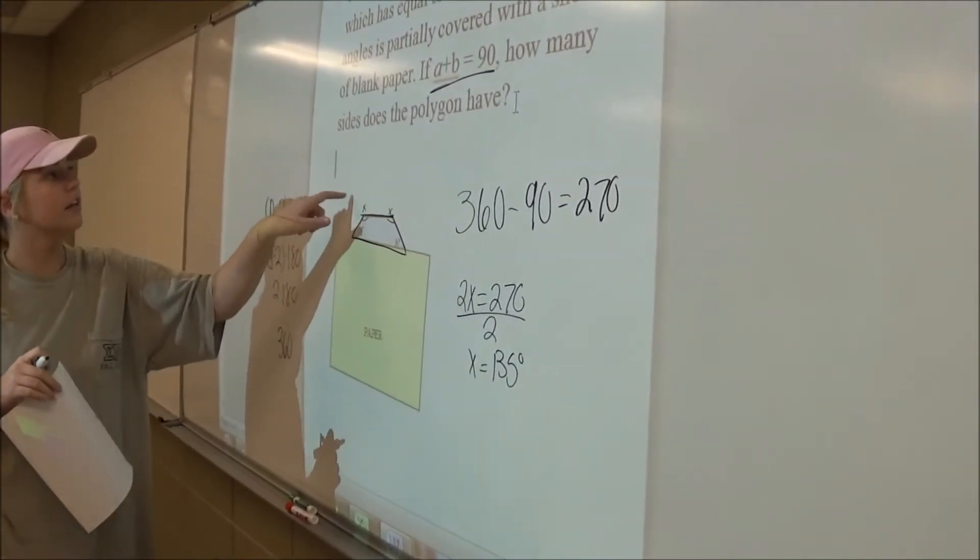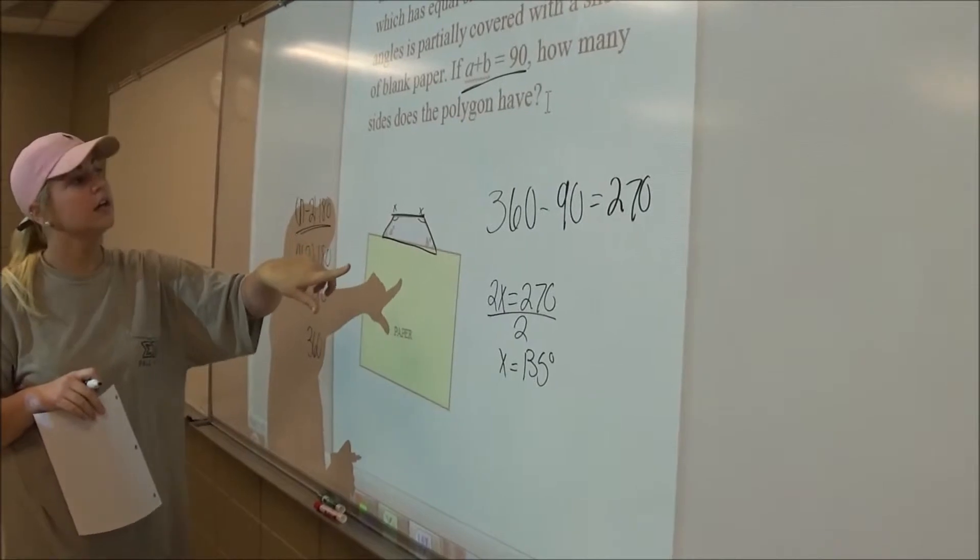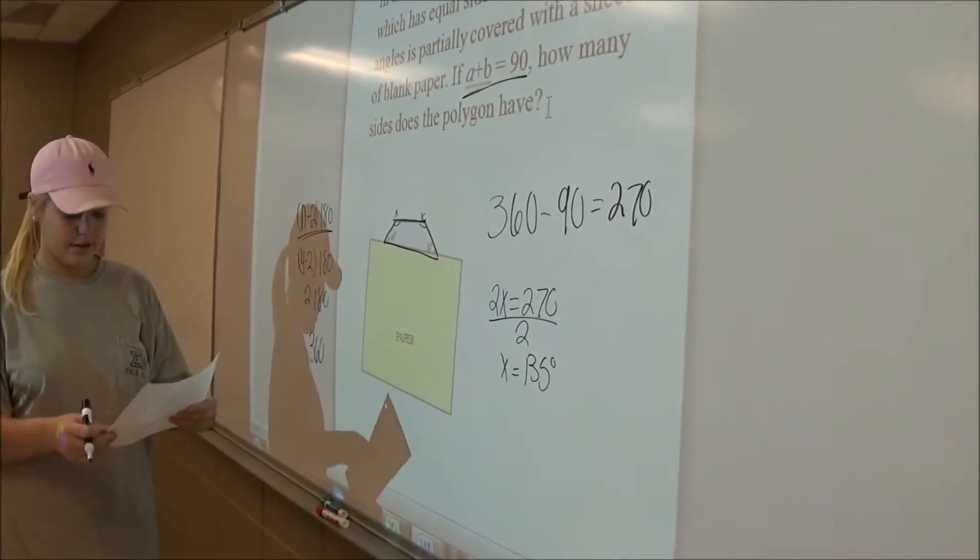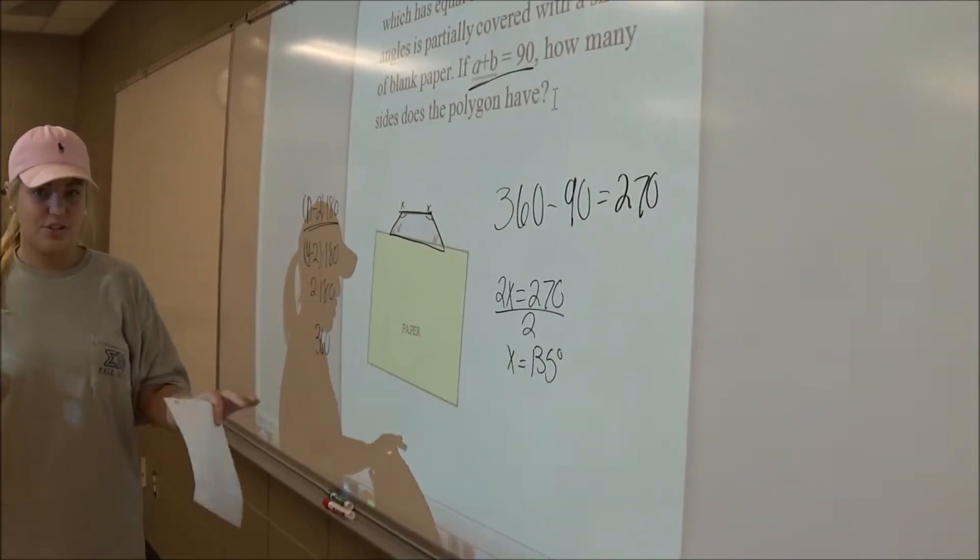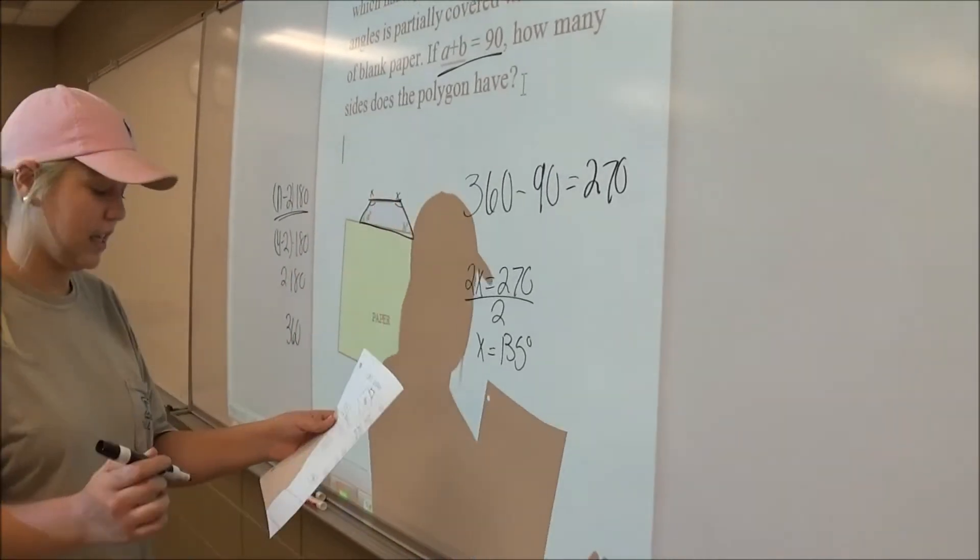So we know that all the angles in the polygon are 135 degrees. And then I kind of did trial and error just to see.